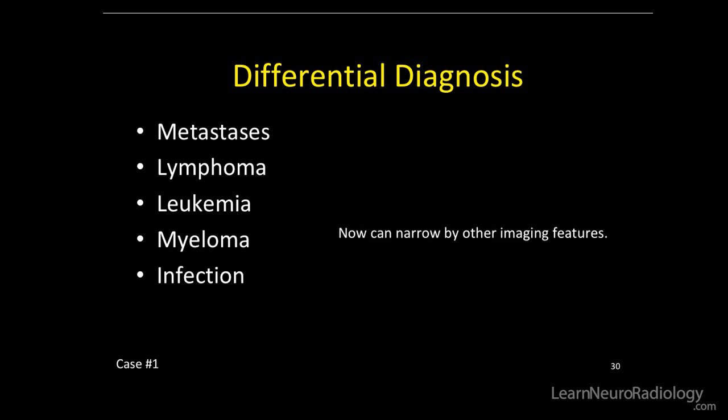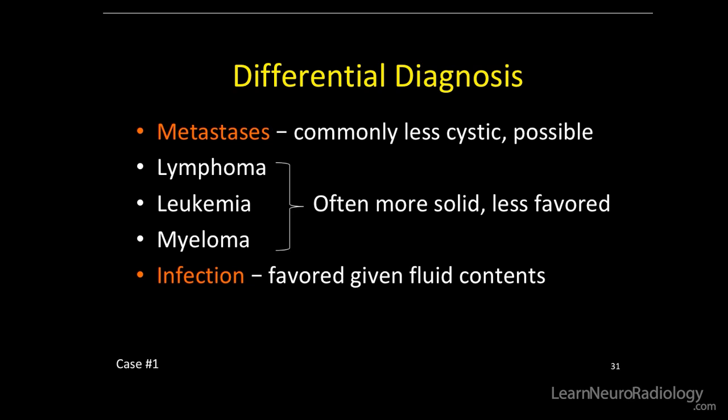We can now narrow this down by other imaging features. Lymphoma, leukemia, and myeloma usually show a more solid enhancement pattern, but this one had a peripheral enhancement pattern. Metastasis is commonly less cystic, but possible. We're going to favor infection for this case, given the peripheral enhancement and fluid contents.